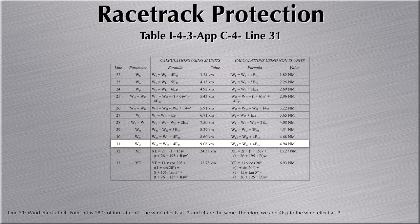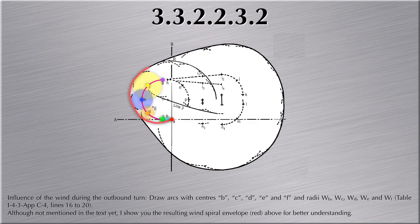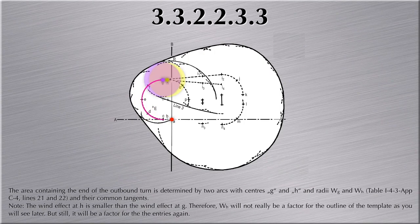The last two lines will have to wait until we discuss the entries. Looking at PANS OPS paragraph 3.3.2.2.2.3.2, it tells us that the influence of the wind during the outbound turn will result from drawing the arcs with centers B, C, D, E, and F with the radii WB, WC, WD, WE, and WF — drawing the wind effects in a non-directional fashion around the predefined points.